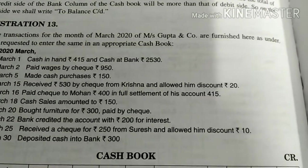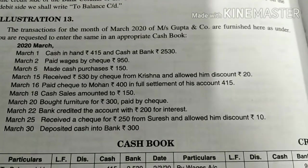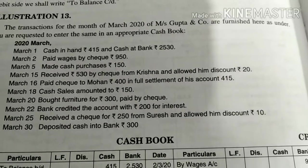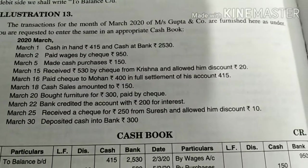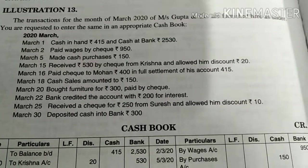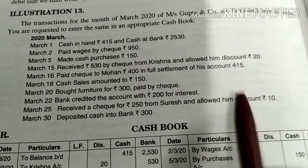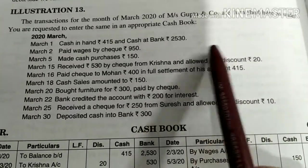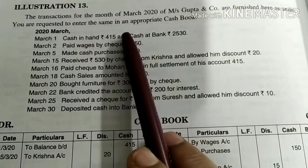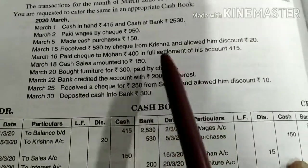Hello, I am Nina Mahajan from Spiritual Academy for Commerce. Today we are going to solve the full-fledged question of a cashbook, that is a triple column cashbook. Let's read the statement: Transactions for the month of March 2020 of Masses Gupta & Company are furnished here as under. You are requested to enter the same in an appropriate cashbook.